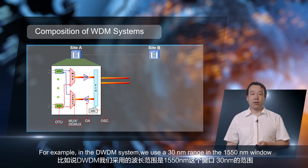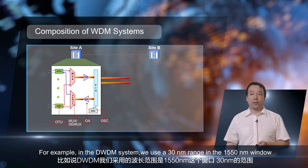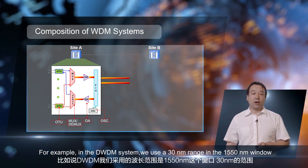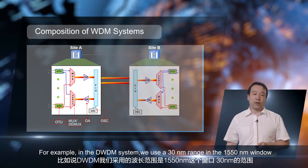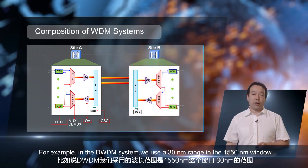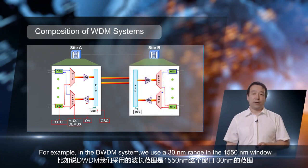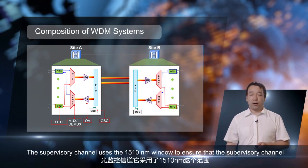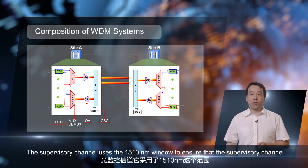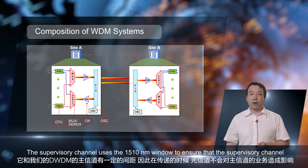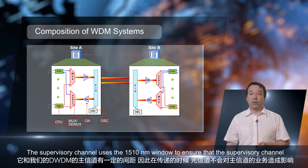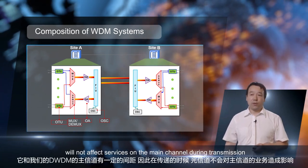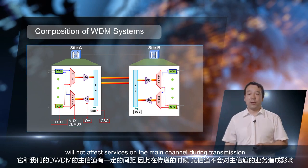Generally, the optical supervisory unit uses an independent wavelength outside the DWDM wavelength range. For example, in the DWDM system, we use the 1530 nm range in the 1515 nm window. The supervisory channel uses the 1510 nm window to ensure that the supervisory channel will not affect signals on the main channel during transmission.